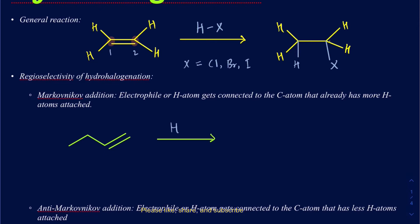When I'm adding HCl to 1-butene, I have two carbons bearing the double bond — carbon one and carbon two. The question is, which carbon gets the hydrogen and which gets the chlorine? The easier way to memorize it: whichever carbon has more hydrogens in the beginning will get the electrophile — the incoming hydrogen from the binary acid. Looking at carbon one, I have two hydrogens on it, and carbon two has only one hydrogen. So I'm going to add the incoming hydrogen onto carbon one because it already has more hydrogens.